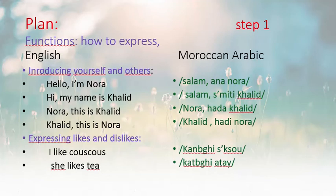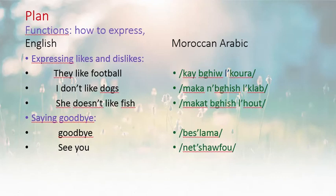Now let's go to expressing likes and dislikes. 'I like couscous' — couscous is the same word in Moroccan Arabic too. Number two: 'She likes tea.' Number three: 'They like football.' Note the negative form 'I don't like' — we start with a prefix and finish with a suffix. 'She doesn't like fish.'